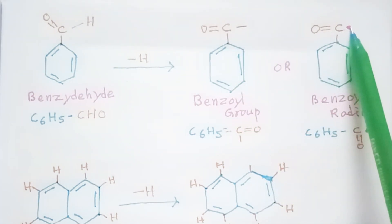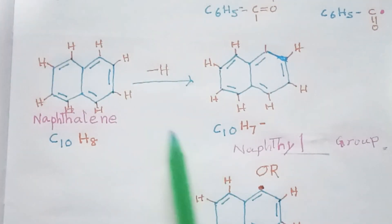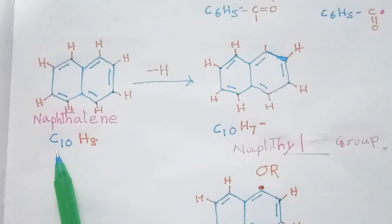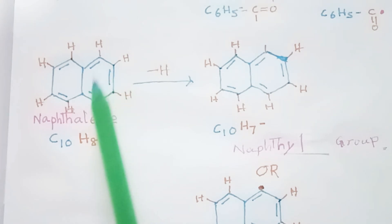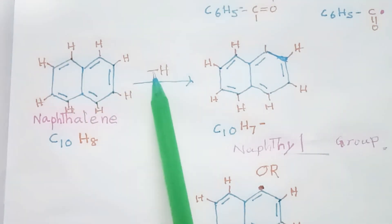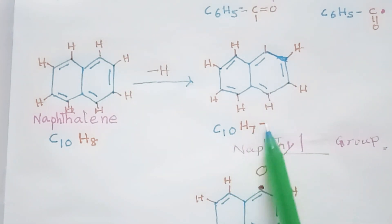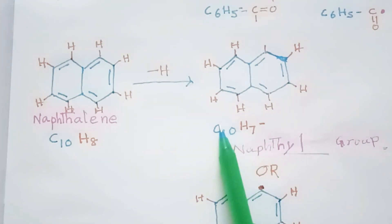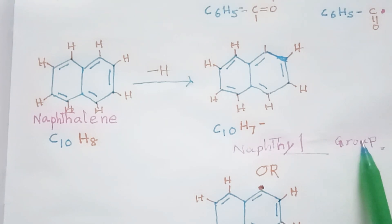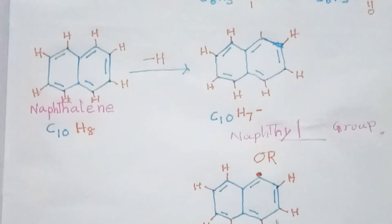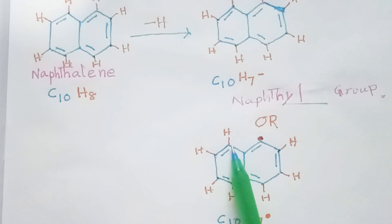Now let's see another aryl group or radical — this is the naphthalene ring, which has the formula C10H8 with alternating double bonds. When we remove a hydrogen atom from naphthalene, we get C10H7 with a free valency on that carbon atom. This becomes the naphthyl group.